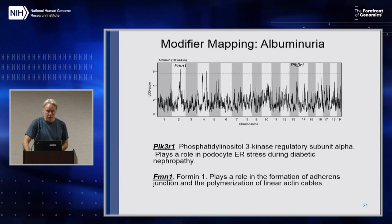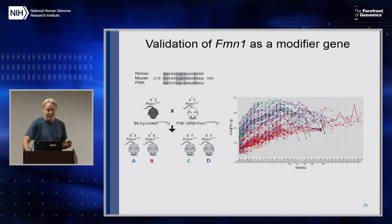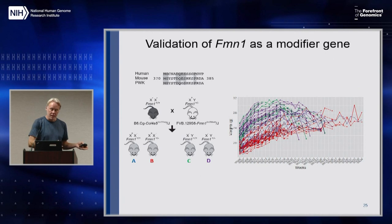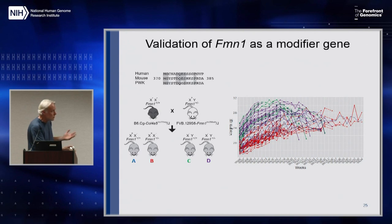We also looked at the proteinuria phenotype. In this case, we found two modifiers. I'd like to point out that these LOD scores are not earth-shattering — they're pretty weak candidates — but we have functional evidence and we're going to go forward and validate them. These validations are ongoing. In this case, the only background we had the modifier on was an FVB background, so this is a slightly mixed background validation experiment for the modifier.